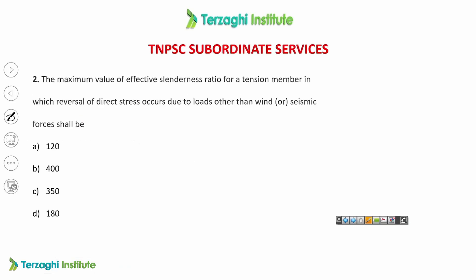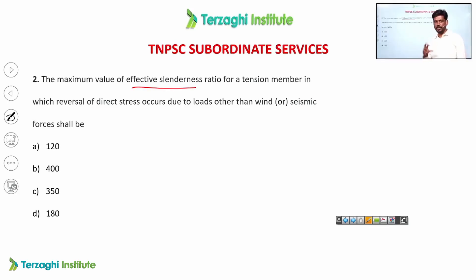The maximum value of effective slenderness ratio for a tension member — in which there is reversal of direct stress — depends on the type of load. There are two categories: one for tension members and one for compression members.